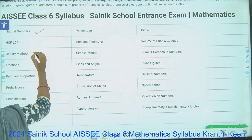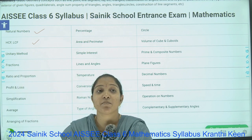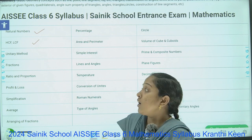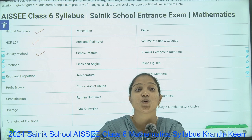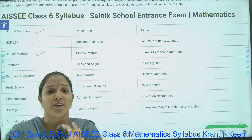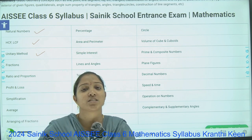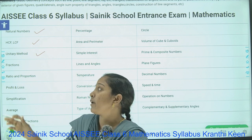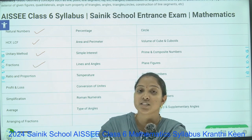Next are HCF and LCM — Highest Common Factor and Least Common Multiple. The next topic is Unitary Method. Unitary method means they give you the cost of, say, 15 apples and ask what is the cost of 10 apples. Such types of questions are involved in Unitary Method.